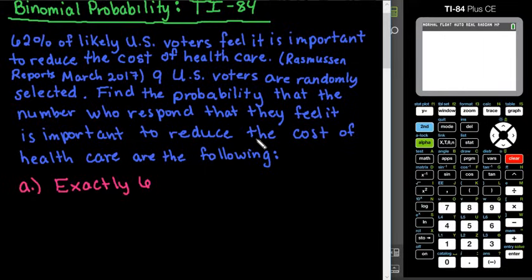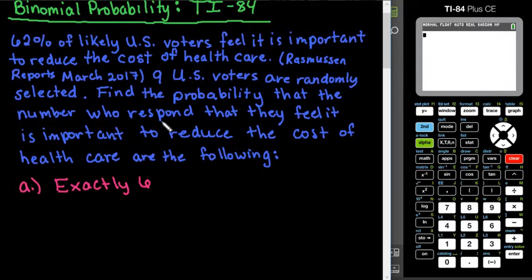This is binomial because either they do feel it is important or they don't, so there are only two outcomes. If they feel it is important, that would be a success. If they don't feel it is important, that would be a failure. We have a fixed number of trials because we have exactly nine people that we are going to be asking, and the probability of success remains constant throughout.